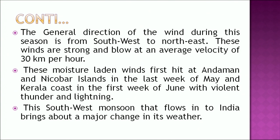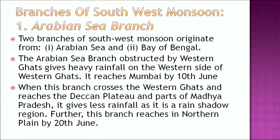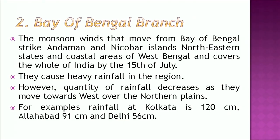There are two branches of the southwest monsoon. The first is the Arabian Sea branch, which is obstructed by the Western Ghats and gives heavy rainfall on the western side. It reaches Mumbai by 10th June. When it crosses the Western Ghats and reaches the Deccan Plateau and parts of Madhya Pradesh, it gives less rainfall as it is a rain shadow region. This branch reaches the northern plains by 28th June. The second is the Bay of Bengal branch, which strikes the Andaman and Nicobar Islands, northeastern states, and coastal areas of West Bengal, covering all of India by 15th July. However, rainfall decreases as it moves westward — Kolkata receives 120 cm, Allahabad 91 cm, and Delhi 56 cm.